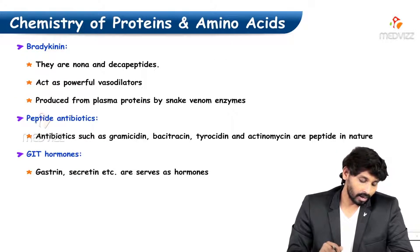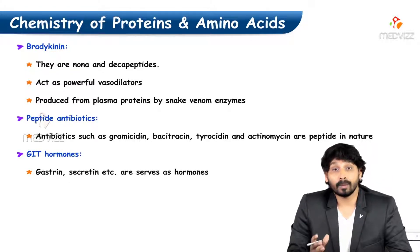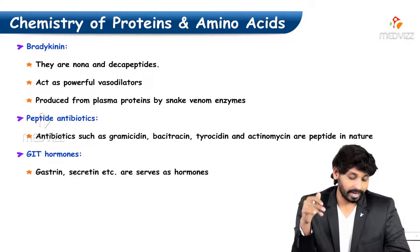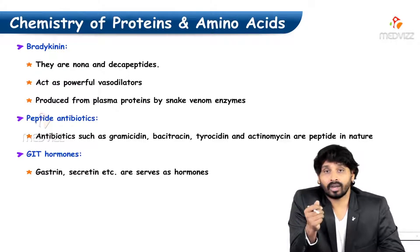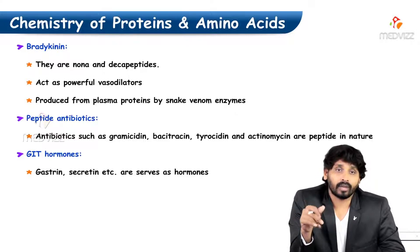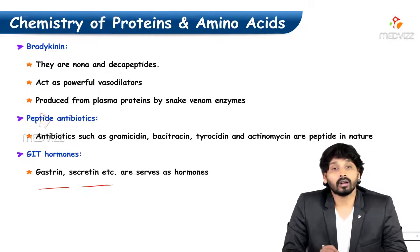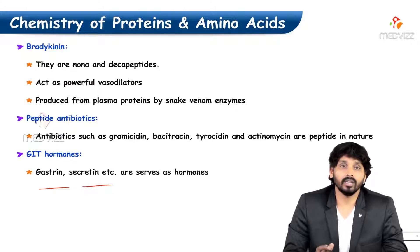Bradykinin consists of nona- and decapeptides that act as powerful vasodilators, produced from plasma proteins by snake venom enzymes. Peptide antibiotics include gramicidin, bacitracin, tyrocidine, and actinomycin, which are all peptide in nature. GIT hormones like gastrin and secretin are digestive or gastric hormones which aid in digestion.